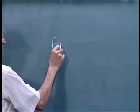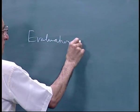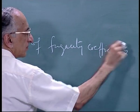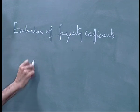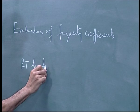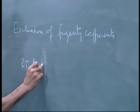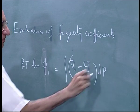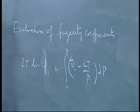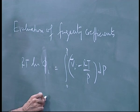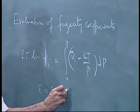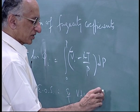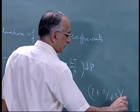I still have to discuss evaluation of fugacity coefficients. The formula is very simple. If the equation of state — we have already seen equations of state. For example, Van der Waals, which also shows the corresponding states principle. The Van der Waals equation is: p plus a over v squared, times v minus b.